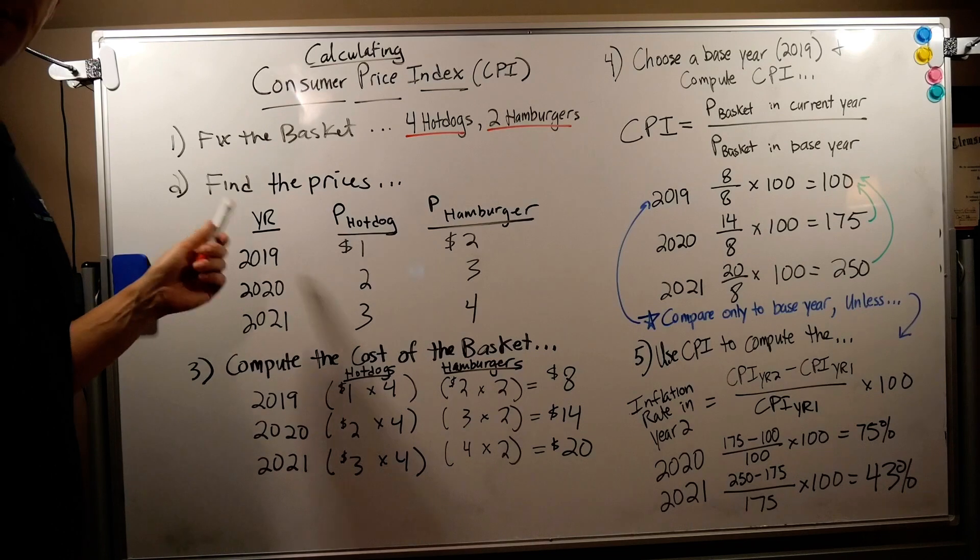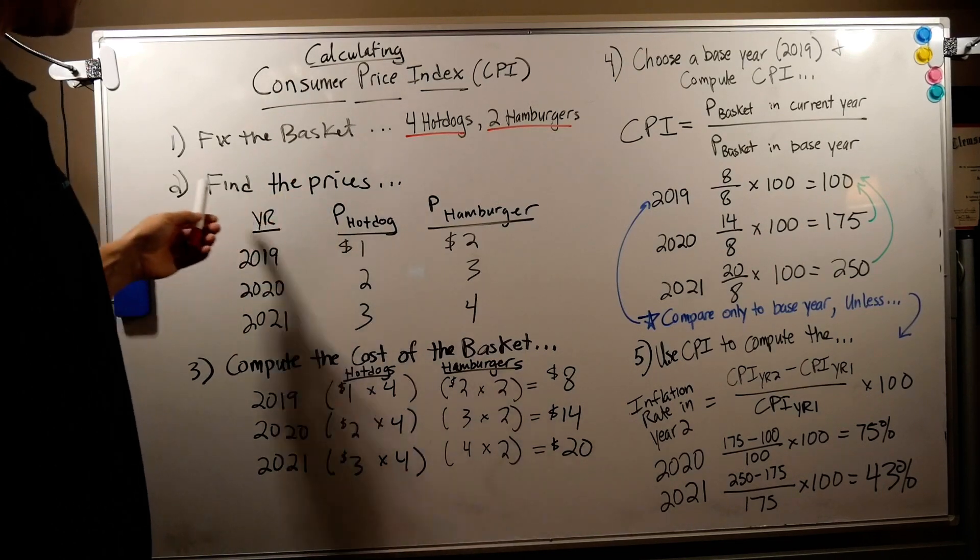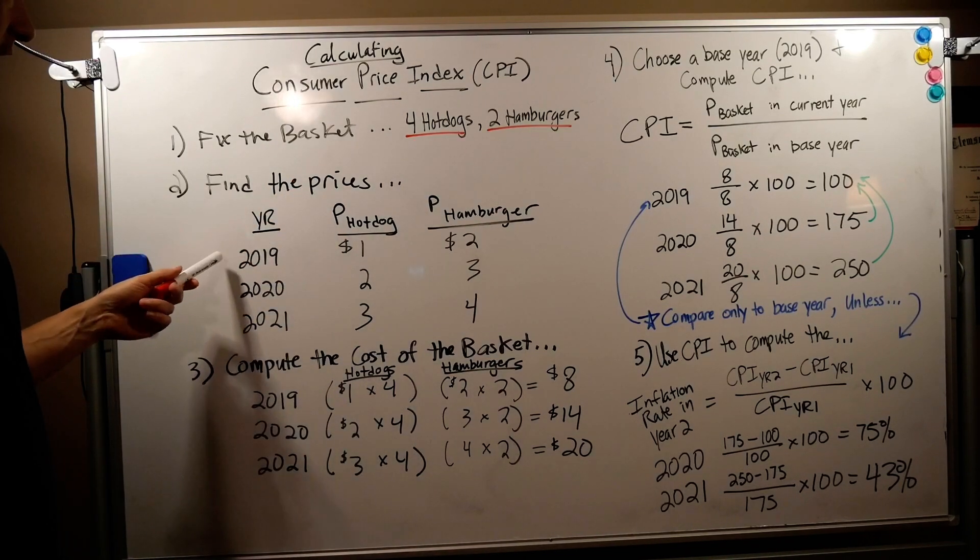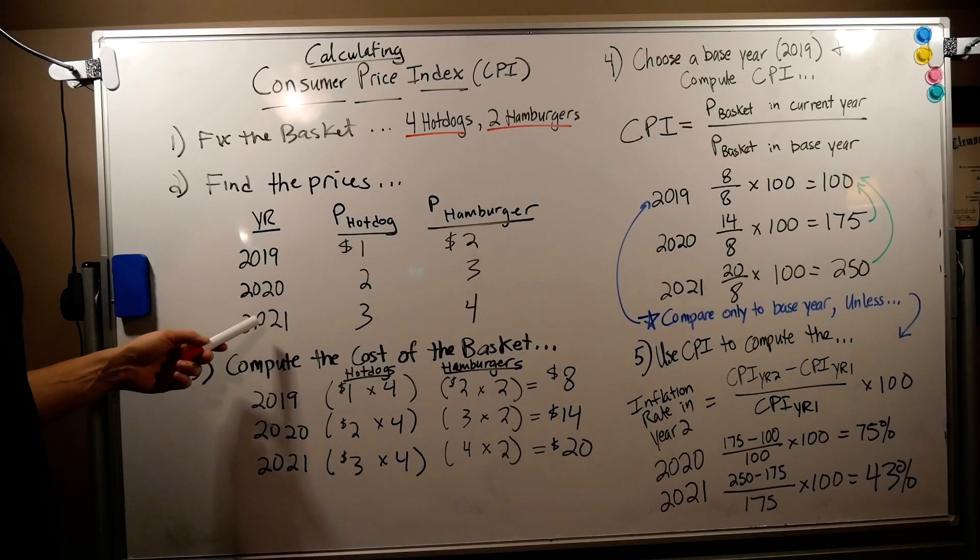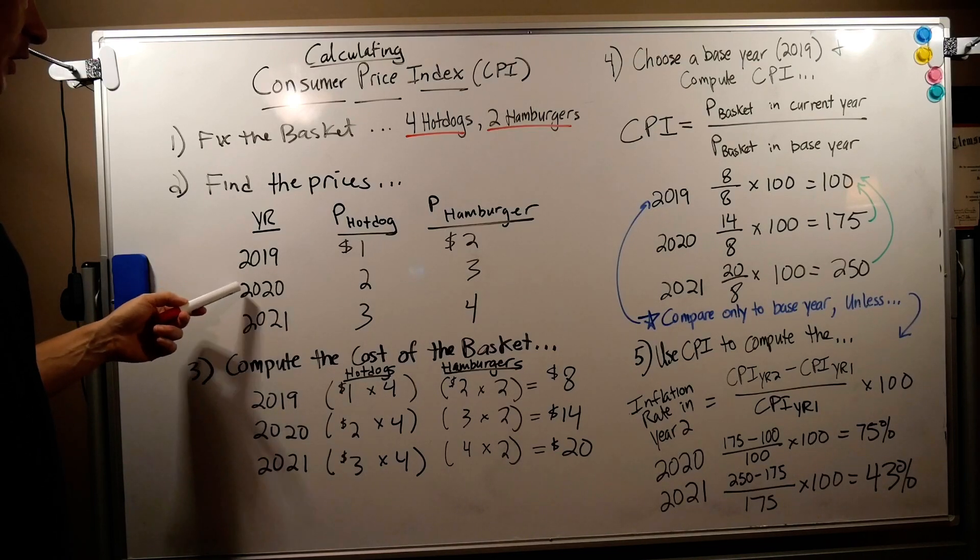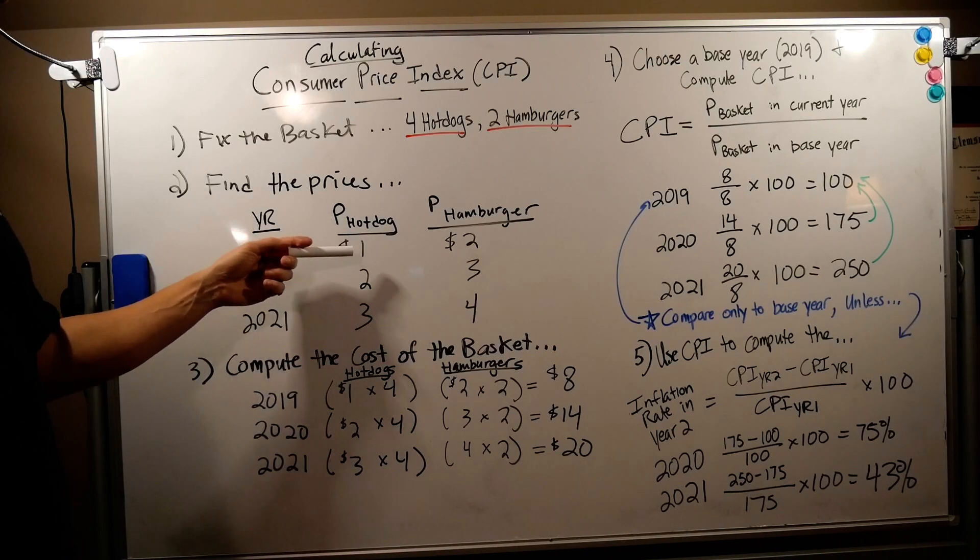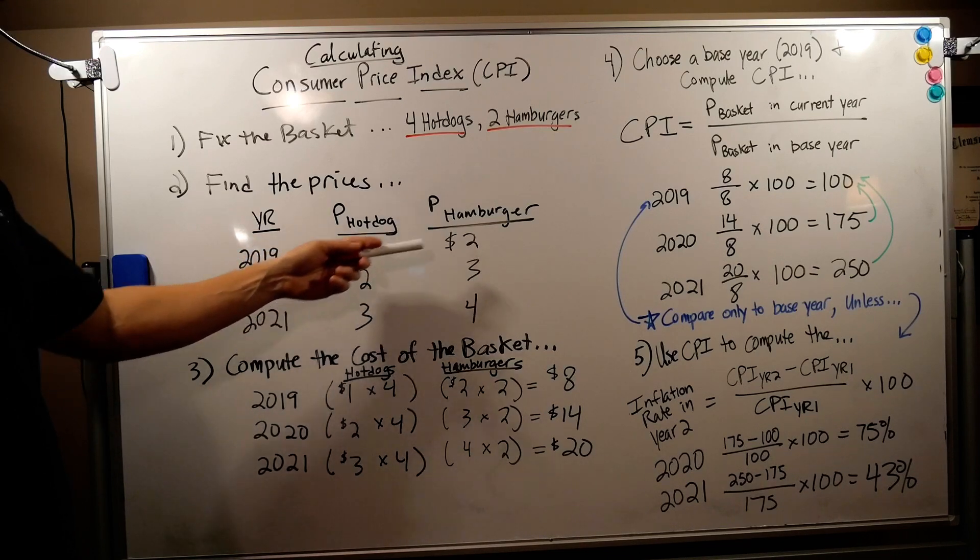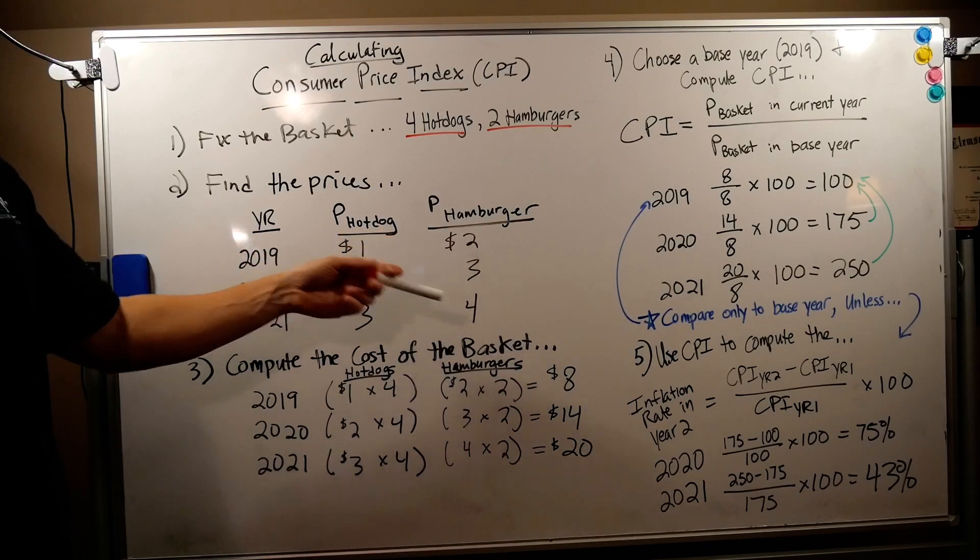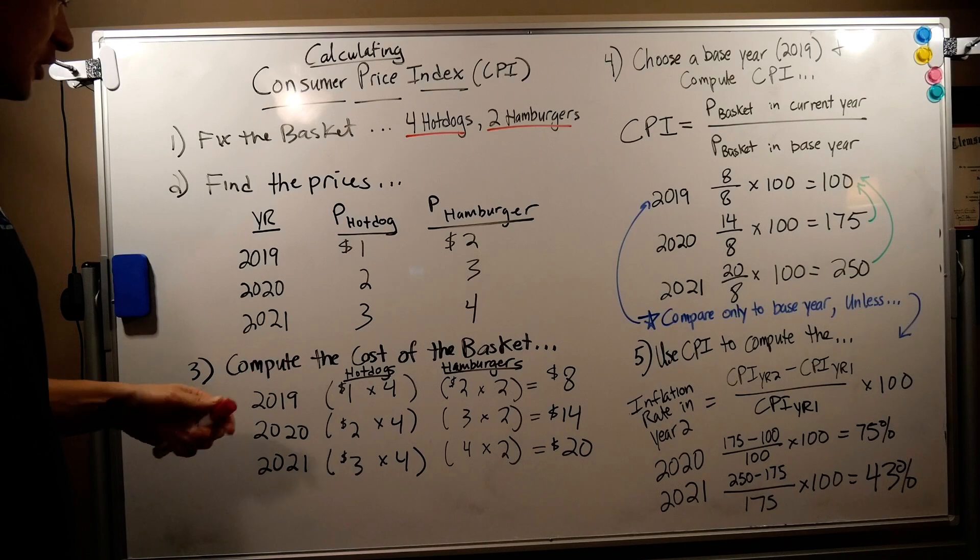The next thing is I find the price. Just like when you're shopping, you look for the price. 2019, 2020, 2021. Price of hot dog goes from $1, $2, $3. Price of hamburgers goes from $2, $3, $4. Prices are going up over time. That illustrates our inflation.